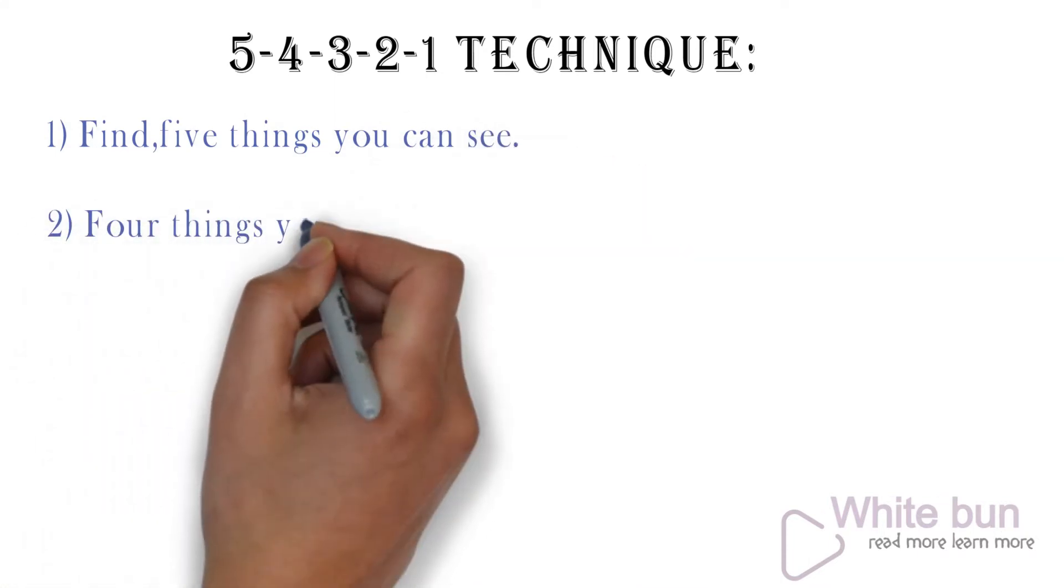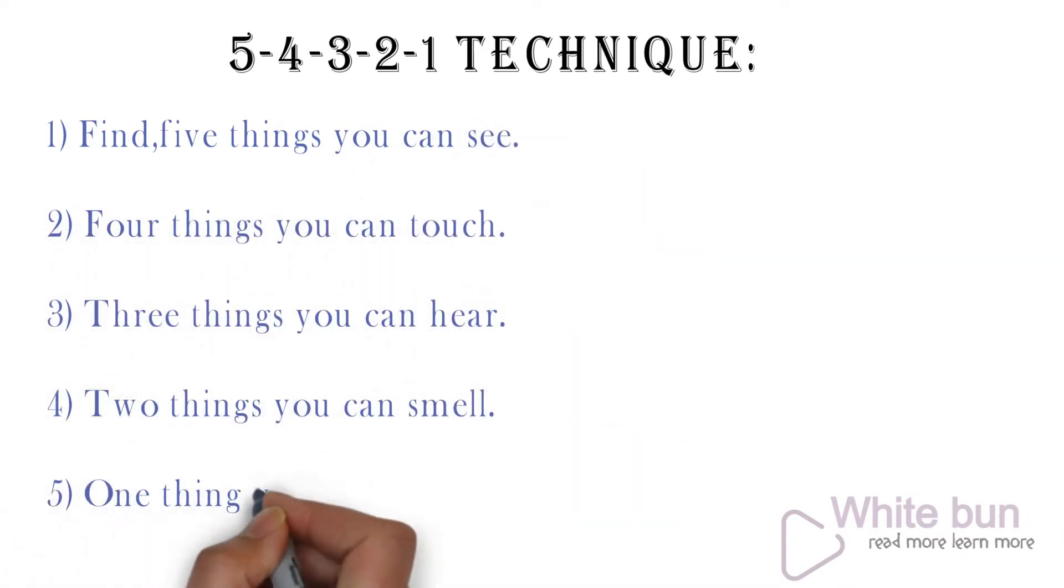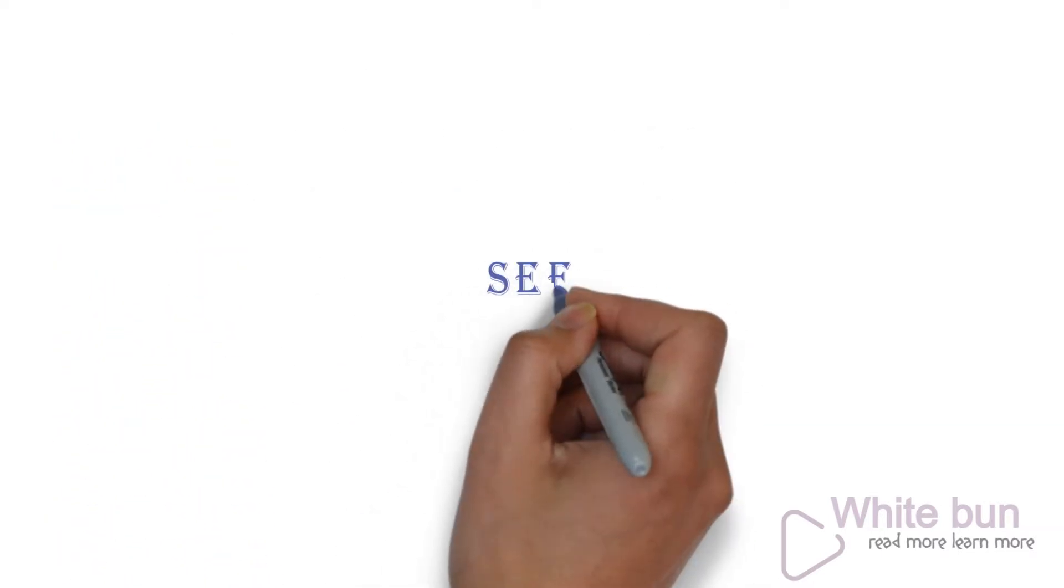Find 5 things you can see, 4 things you can touch, 3 things you can hear, 2 things you can smell, and 1 thing you can taste.